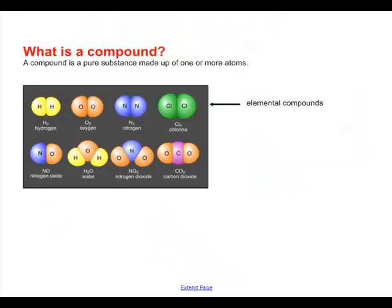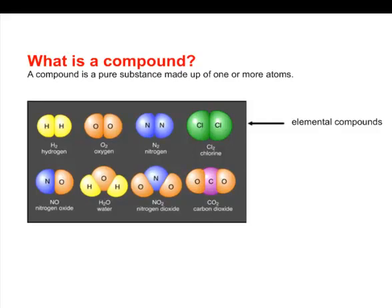What's a compound? A compound is also a pure substance, but it's made up of one or more atoms. Sometimes the compound is made up of the same atom—hydrogen gas is made up of two hydrogens, oxygen gas is made of two oxygens, nitrogen is made of two nitrogen atoms, chlorine gas is made up of two chlorine atoms. We call these elemental compounds because they're made of more than one atom but from the same element.